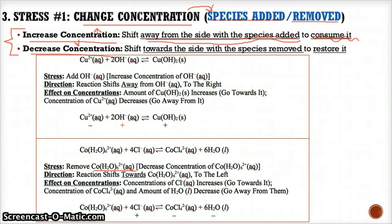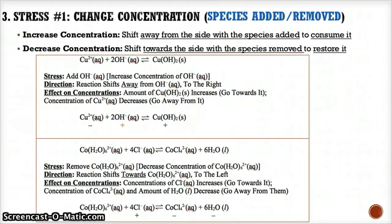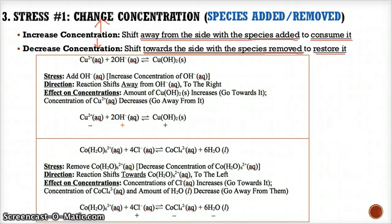On the other hand, if you decrease the concentration, the problem is you have too little of it. So to restore the concentration back up to equilibrium levels, you have to shift towards the side with the species removed so that you can make more of it. In short: add something, shift away from it to use it up; remove something, shift equilibrium towards it to restore it back up to equilibrium levels.